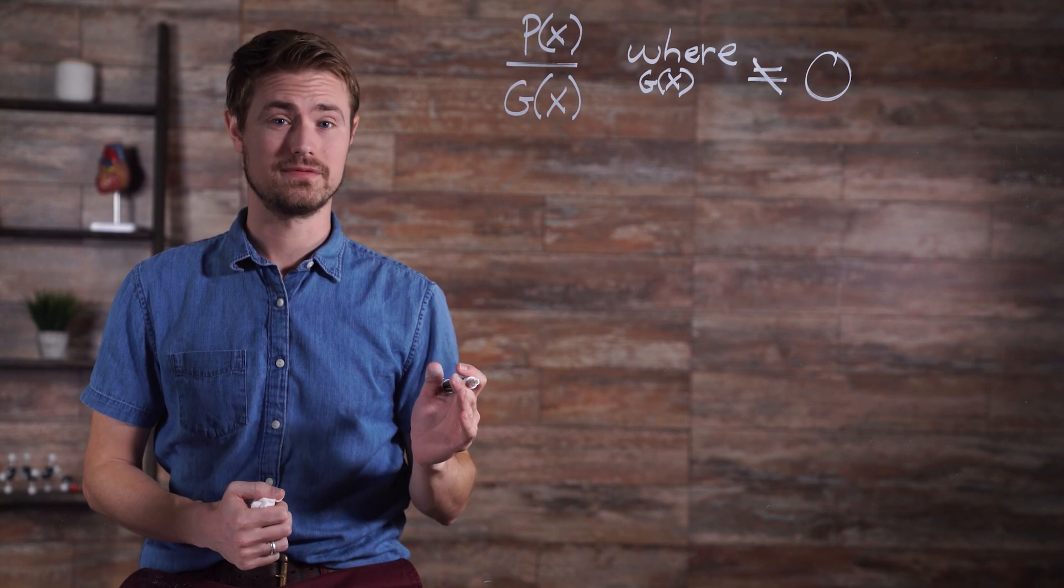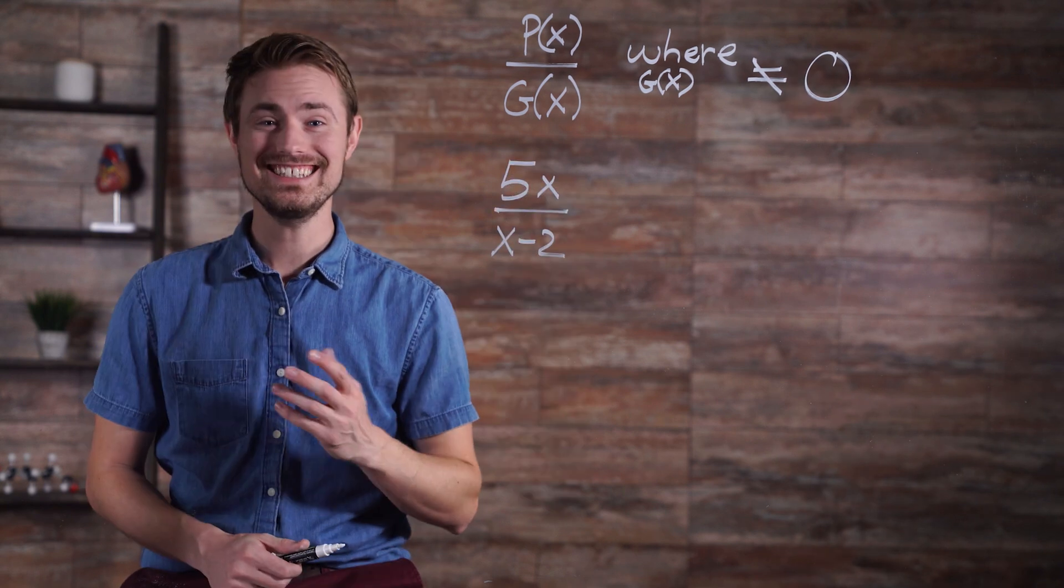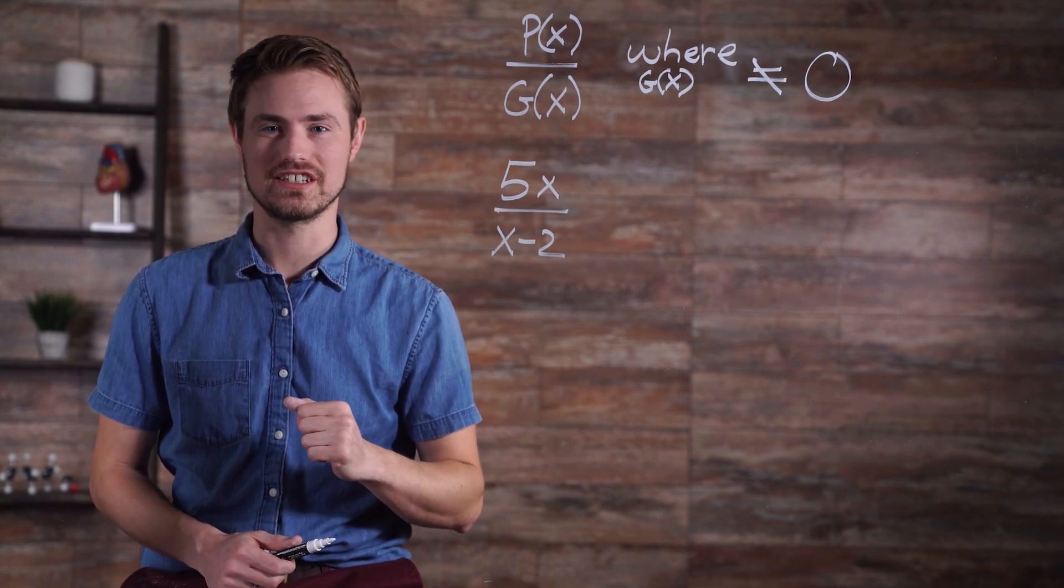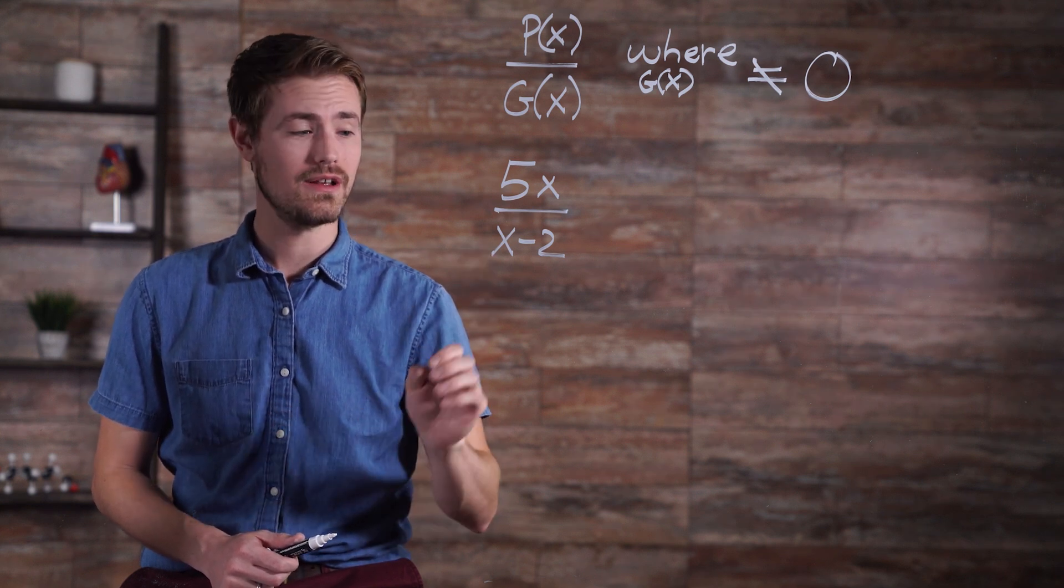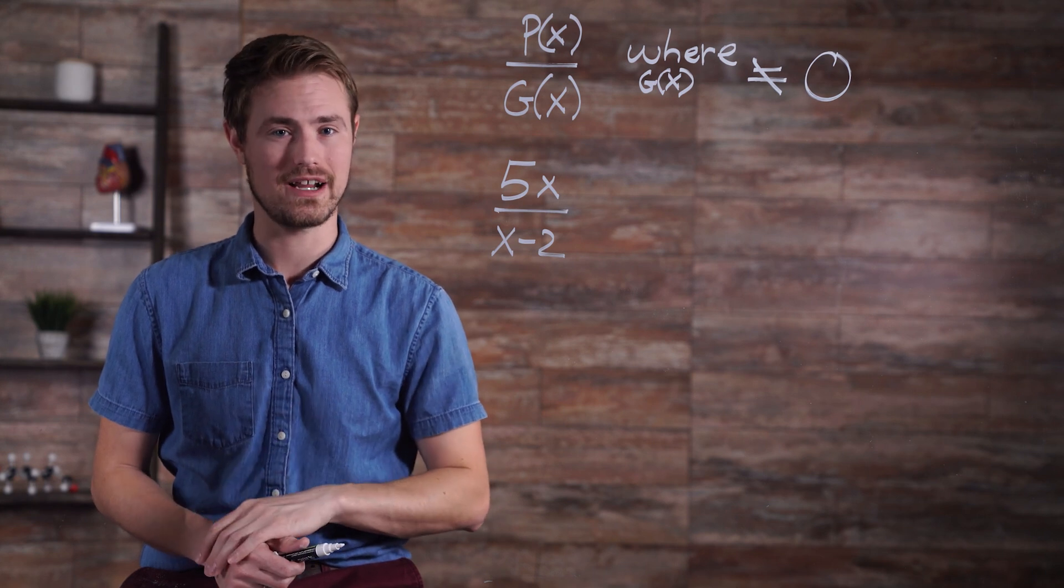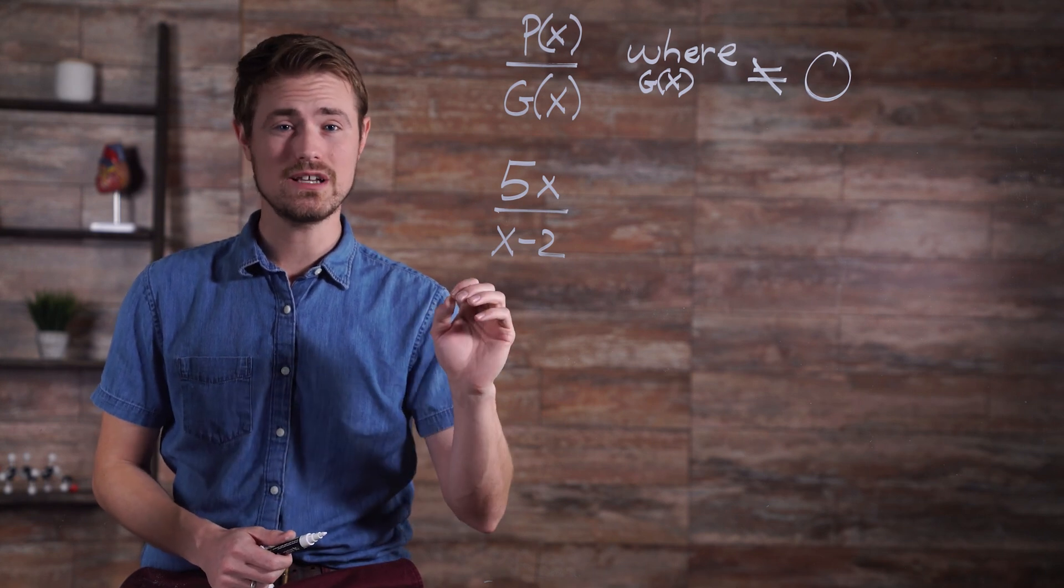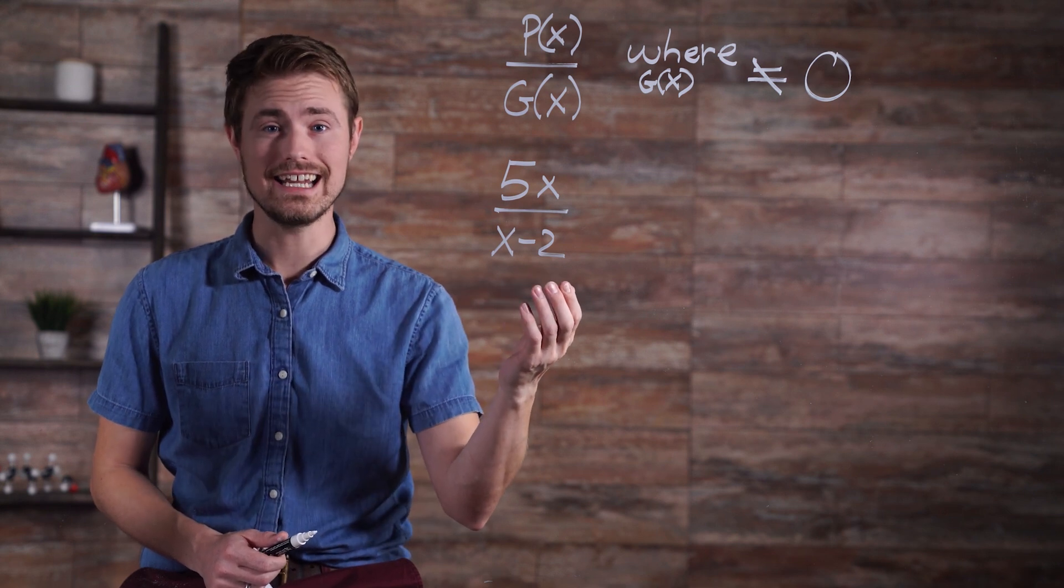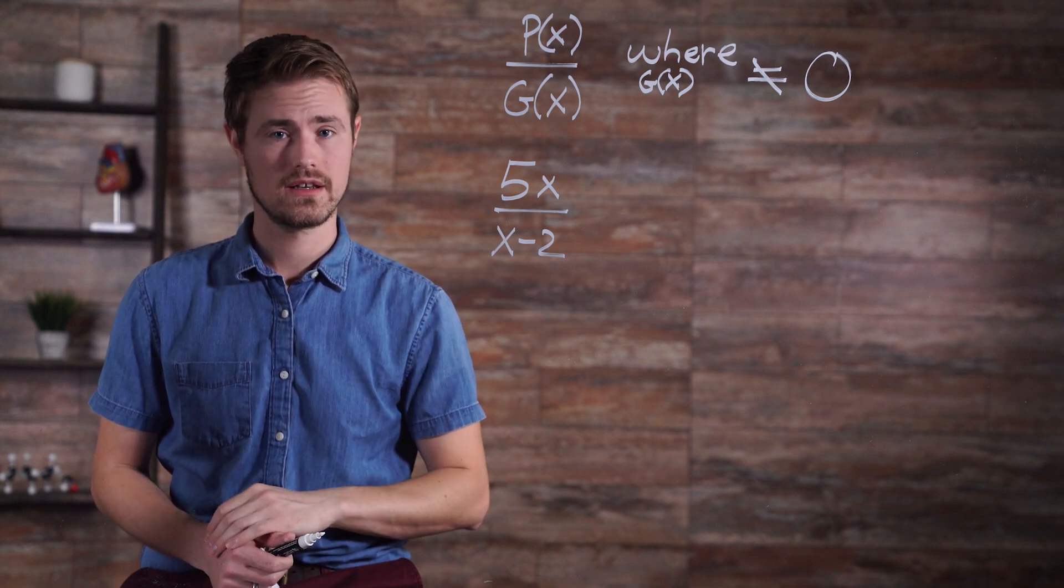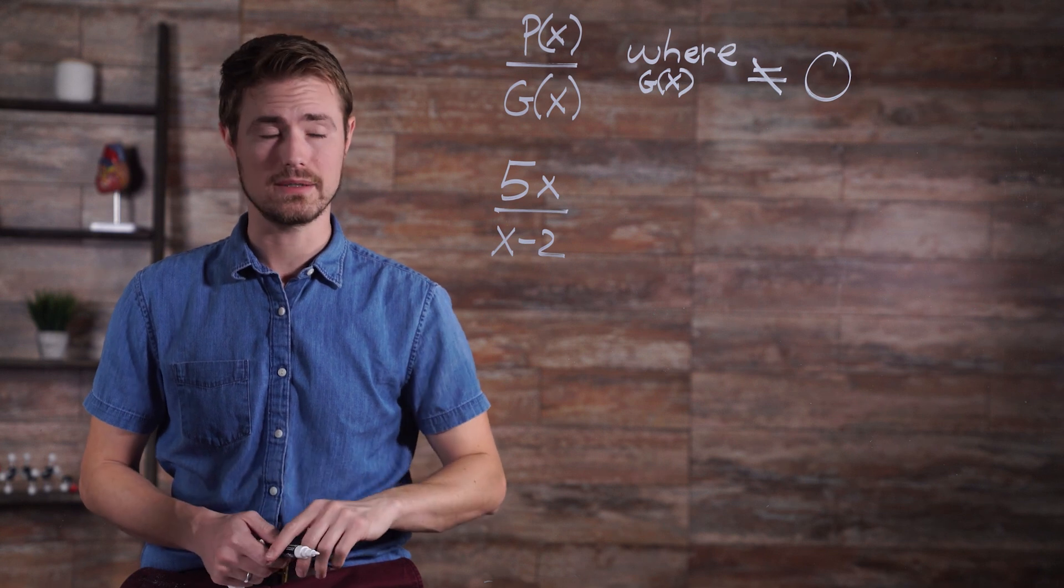Here's an example. This example shows a rational expression with a monomial 5X in the numerator and a binomial X minus 2 in the denominator. The value X equals 2 is the excluded value, as it would result in a denominator of zero. This expression cannot be simplified further.